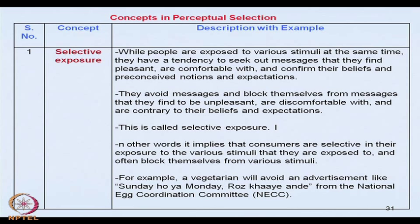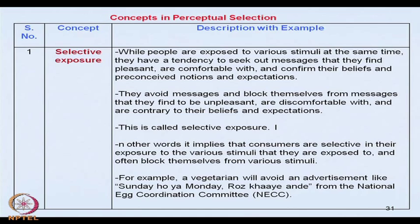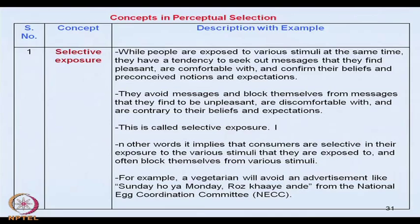For example, a vegetarian will always avoid an advertisement which promotes non-vegetarian food. People will be more selective to stimuli with things they are comfortable with, familiar with, pleasant with, and which are according to their preconceived notions and expectations. On the other hand, stimuli which negate or differ from their beliefs, people will like to avoid.